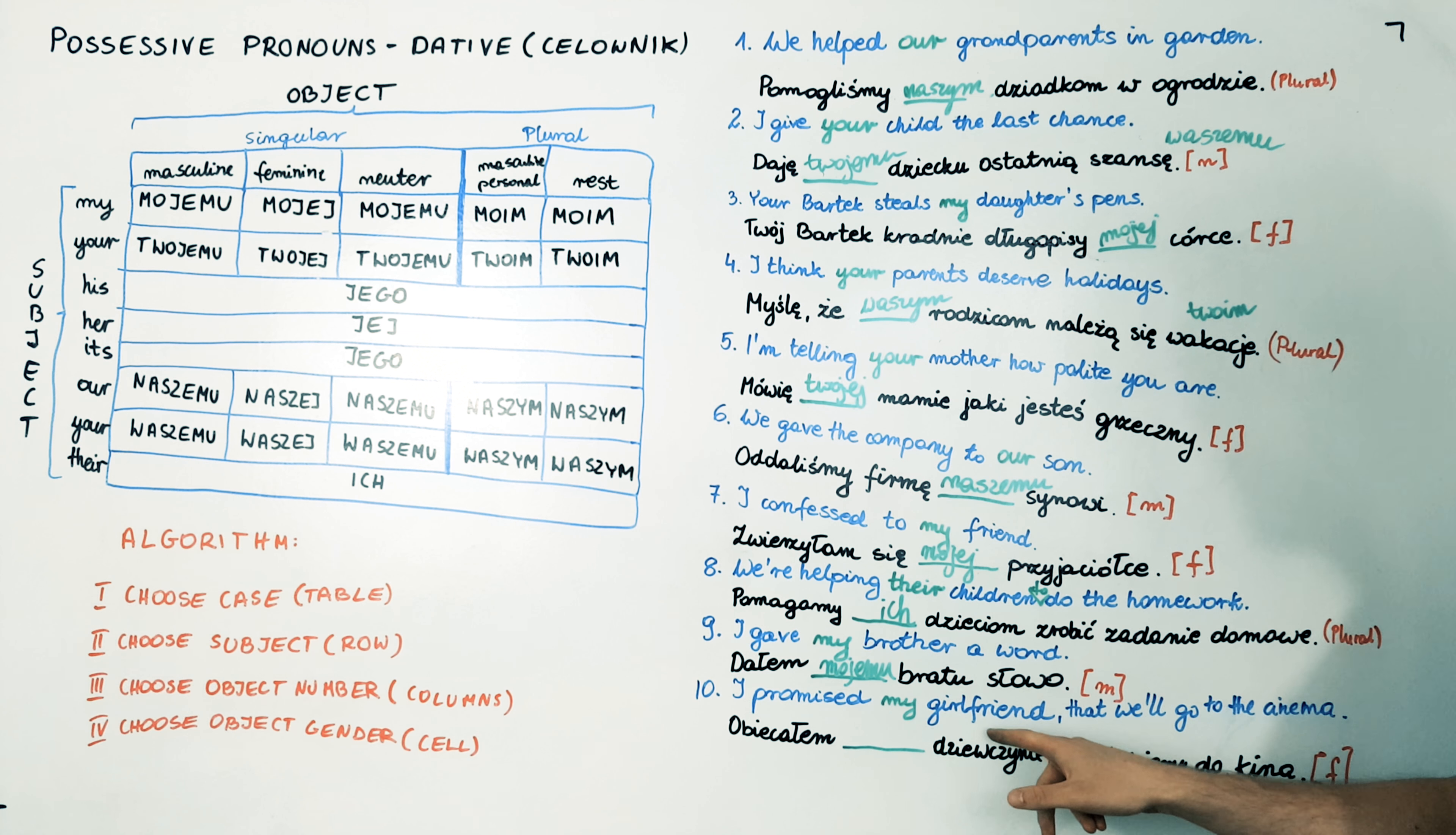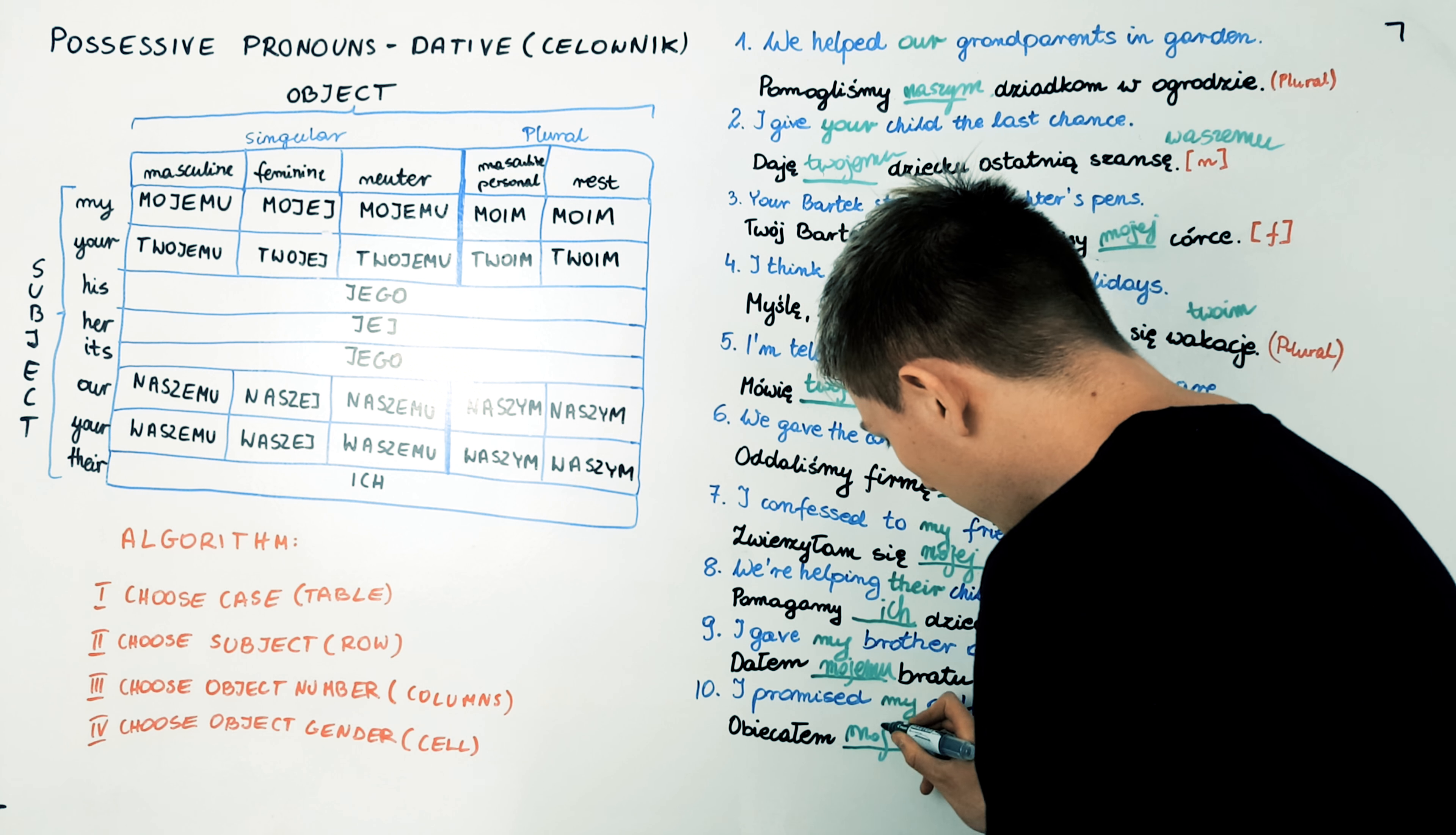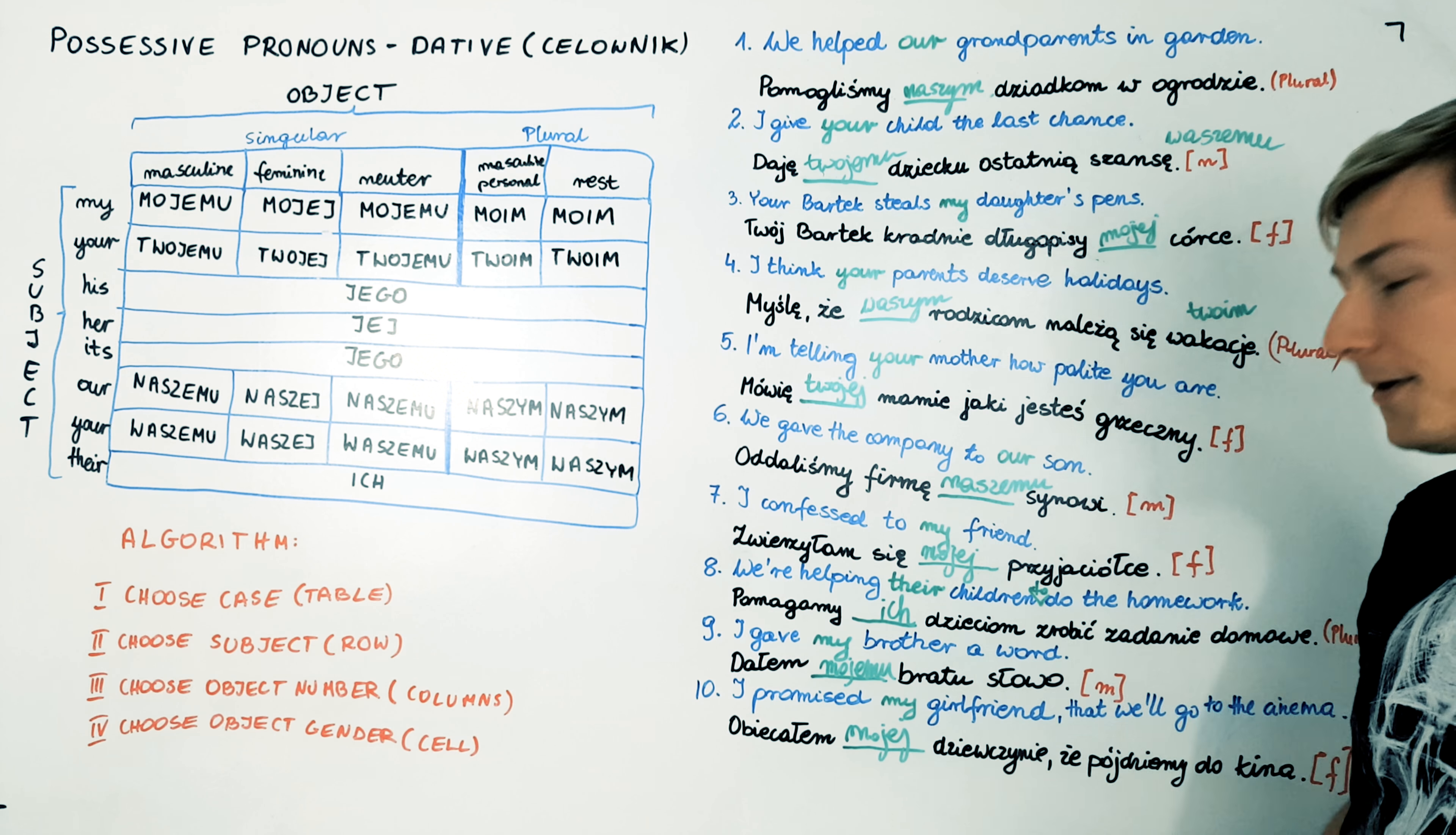I promised my girlfriend that we will go to the cinema. Obiecałem mojej dziewczynie, że pójdziemy do kina. Mojej. So this one. Mojej. Okay.